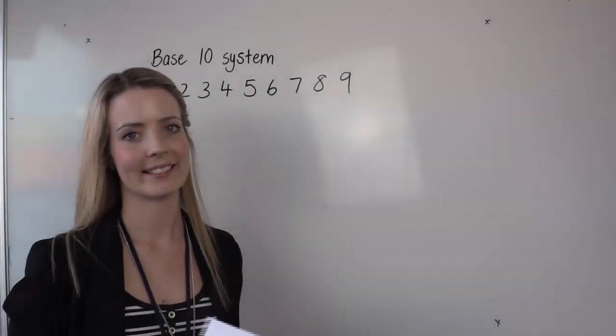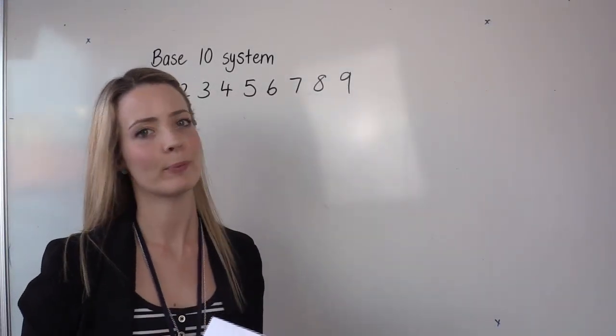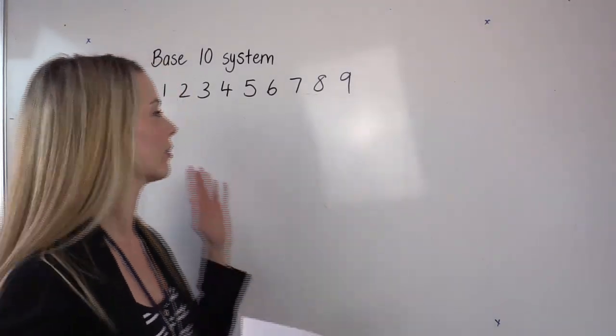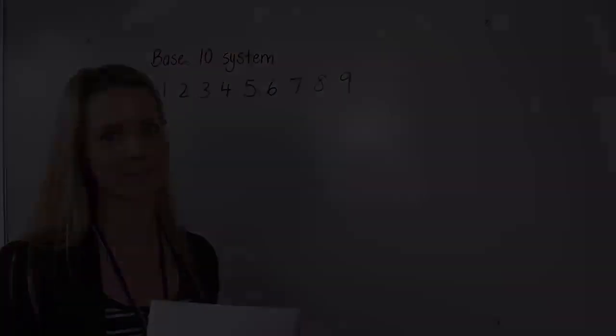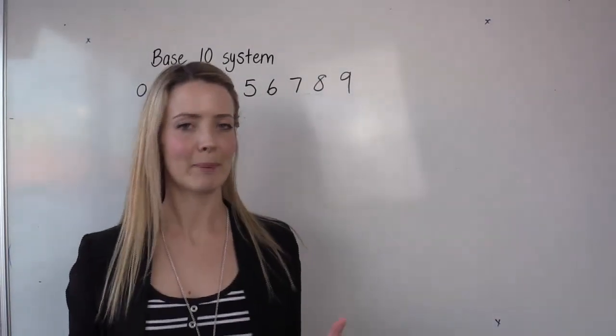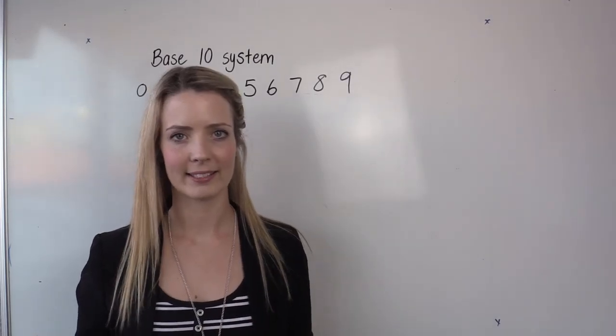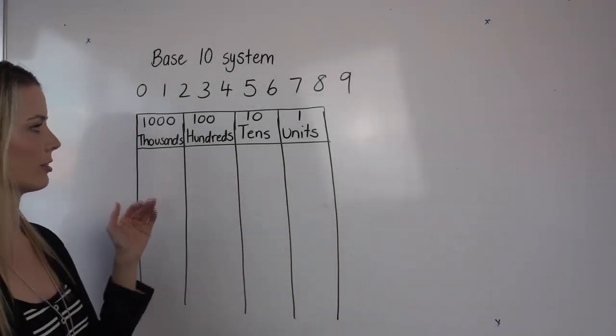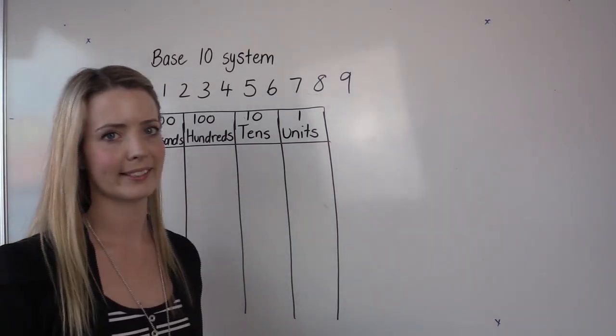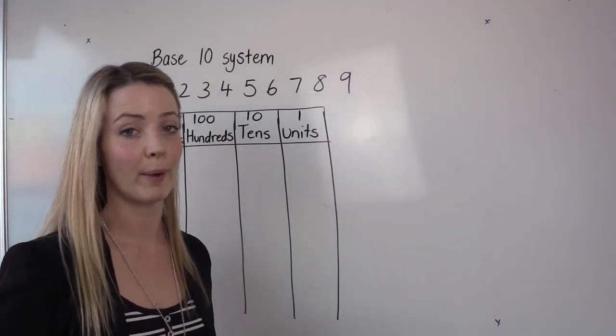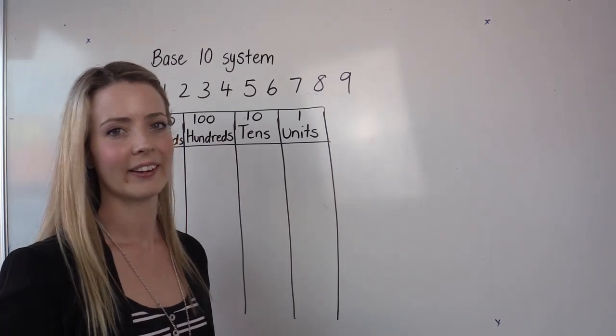We use what's called a base 10 system and that's because we work with 10 numerals from 0 through to 9. So a way of exploring the binary system is to look at the base 10 system and how we teach children. This is our units, tens, hundreds and thousands chart and we're going to be working with this just a little bit to understand how binary works later on.